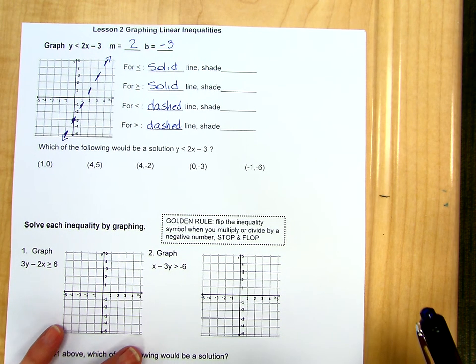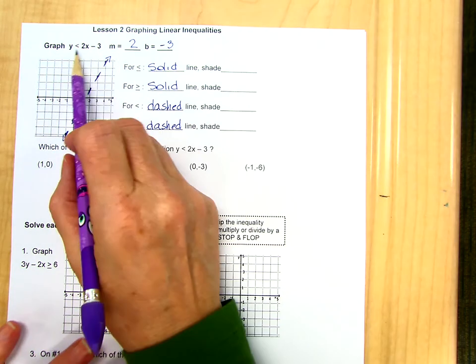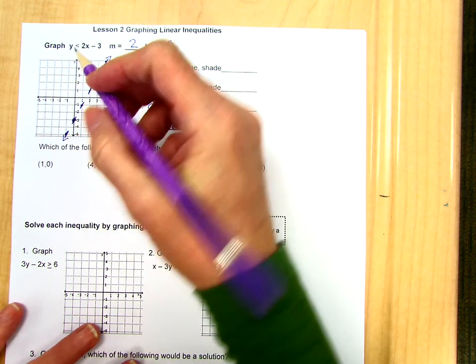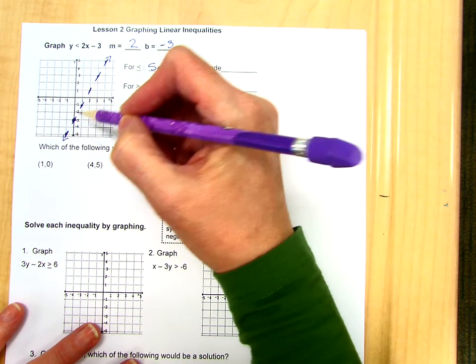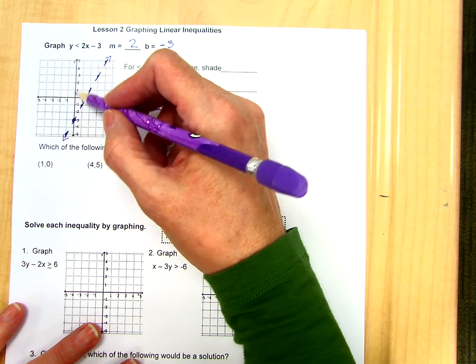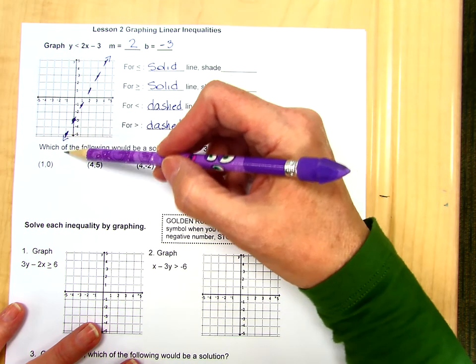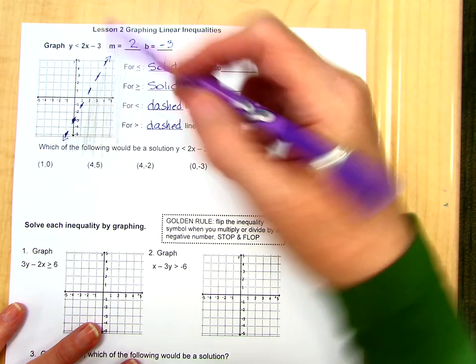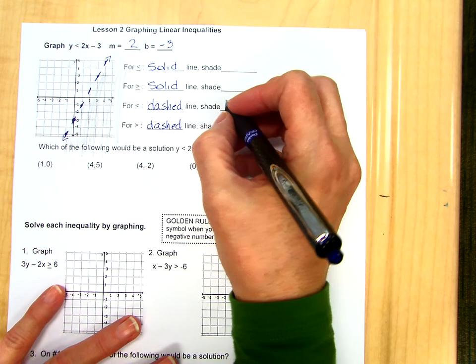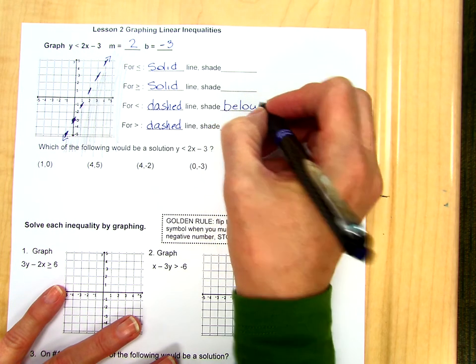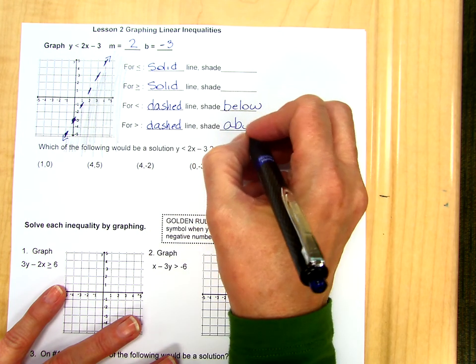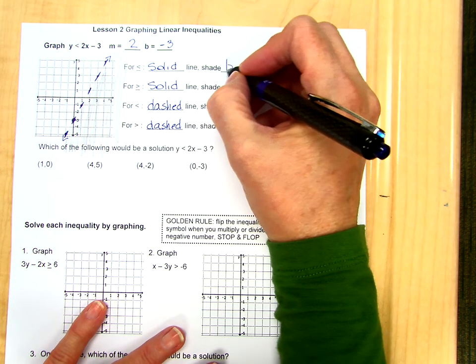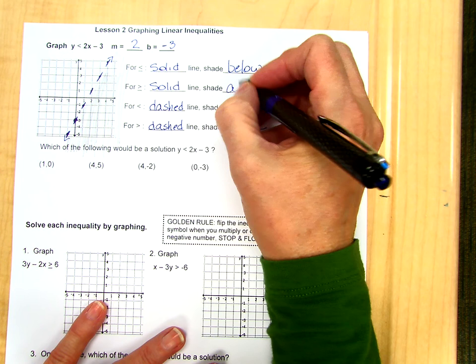Now we have to shade. We want things that are less than this line. So we go to the y-intercept, it's the easiest place to see it, and we want the numbers that are smaller than this intercept. Negative 2 is bigger because it goes up. Negative 4 is smaller, it goes down. So we're going to shade in this area. This is what we would call below the line. So for a less than, we're going to shade below the line, and for a greater than, we will shade above the line. The same thing holds true for less than or equal, that would be below, and greater than or equal would be above.